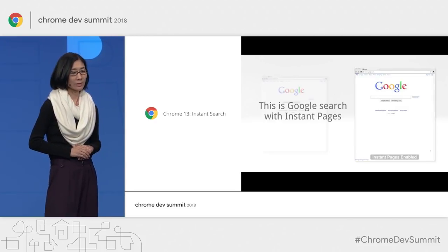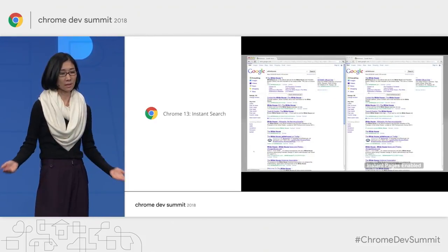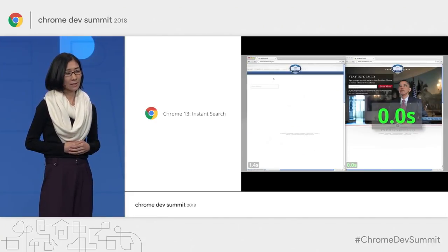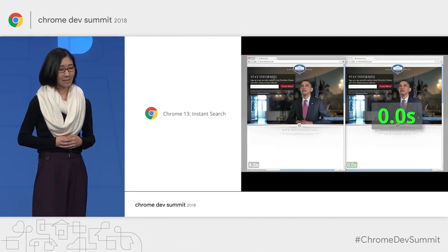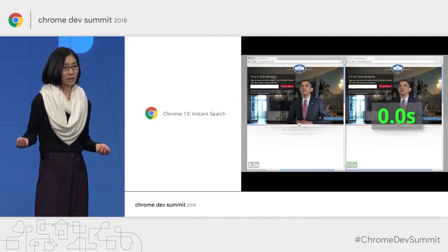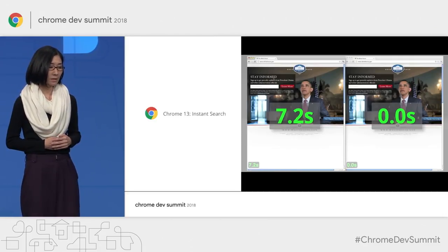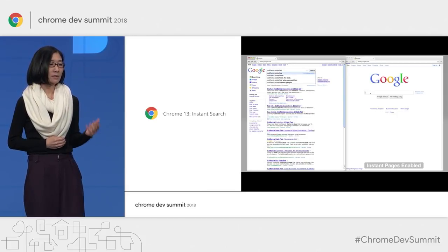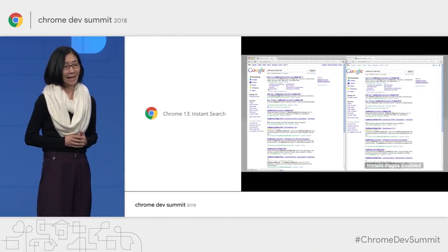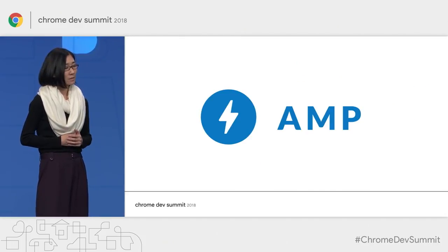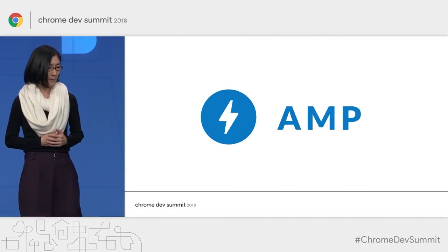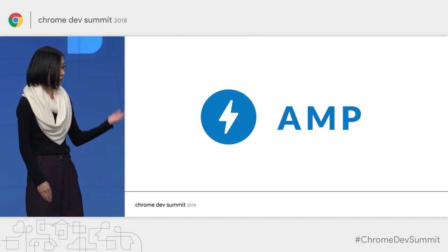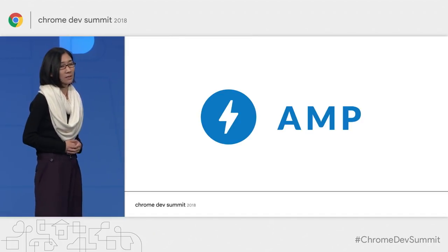Our desire to see seamless user experiences on the web is not new. In Chrome 13, back in 2011, we launched a feature called Instant Search, which provides a blissful user experience by rendering the search results the user would most likely click on. However, the feature only worked in limited scenarios — for privacy reasons, it only worked for results the user had already visited and for which we had high confidence of user interest. Then in 2015, another example of such user experience was launched: AMP. Rudy is going to walk us through what it took and where things are headed.